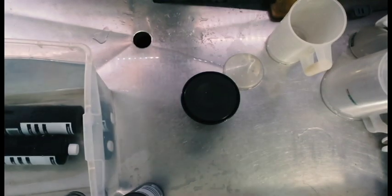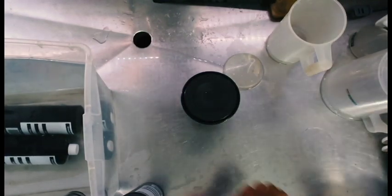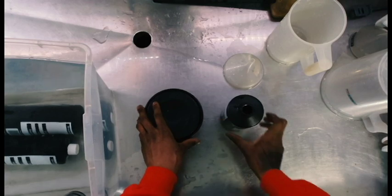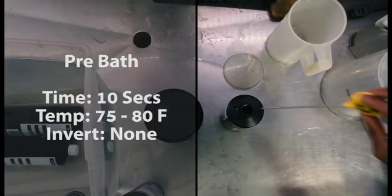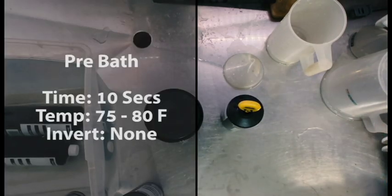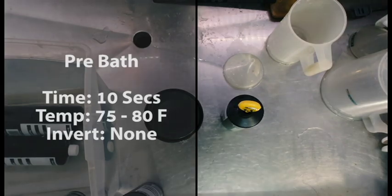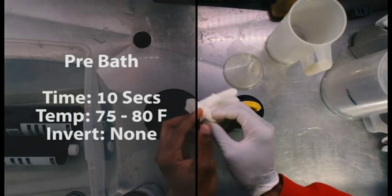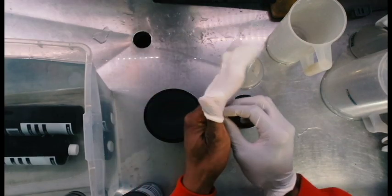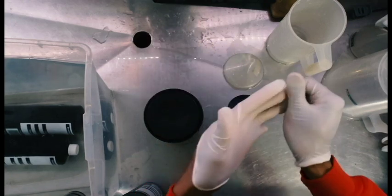Alright, so first step is we're going to check on the pre-bath. For the pre-bath, we need to get it to about 75 to 80 Fahrenheit. So I'm going to check on that right now. Before I start, I'm also going to just put on some gloves before I start this.